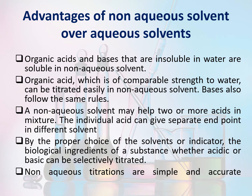For assay of weak acids, the various titrants used are 0.1 normal sodium methoxide, potassium methoxide, lithium methoxide, and tetrabutylammonium hydroxide. Advantages of non-aqueous solvents over aqueous solvents: organic acids and bases that are insoluble in water are soluble in non-aqueous solvents. Organic acids of comparable strength to water can be titrated easily in non-aqueous solvents. Bases also follow the same rules. A non-aqueous solvent may help two or more acids in a mixture — the individual acids can give separate endpoints in different solvents. By proper choice of solvent or indicator, the active ingredients of a substance, whether acidic or basic, can be selectively titrated. Compared to all other titrimetric methods, non-aqueous titrations are simple and accurate.